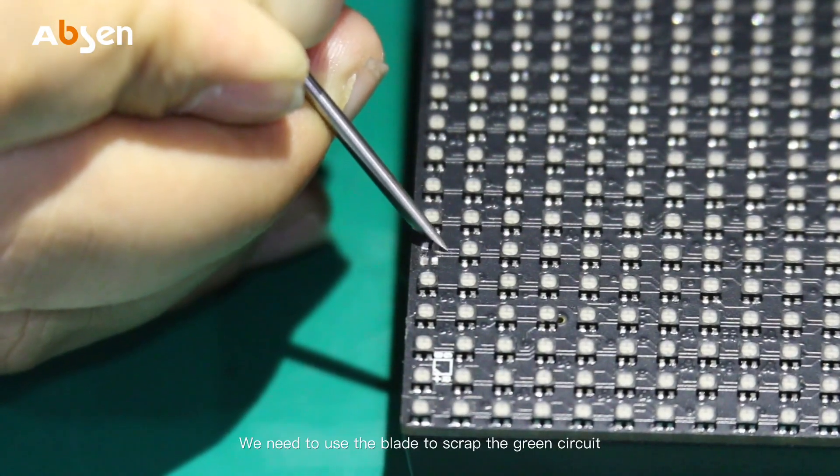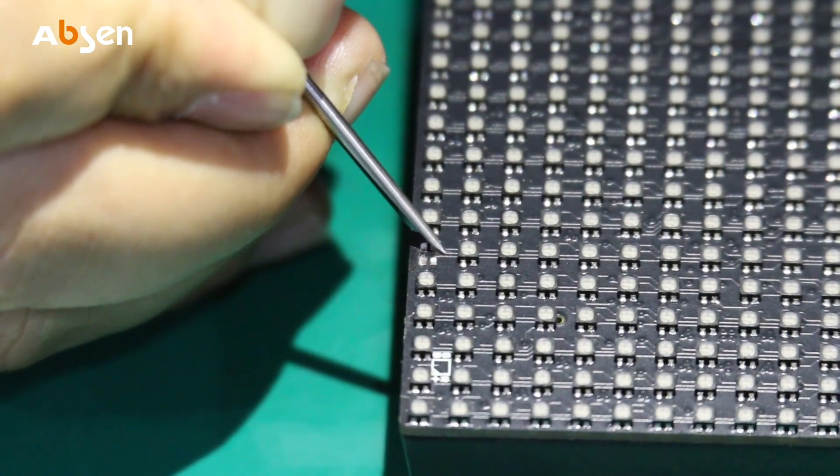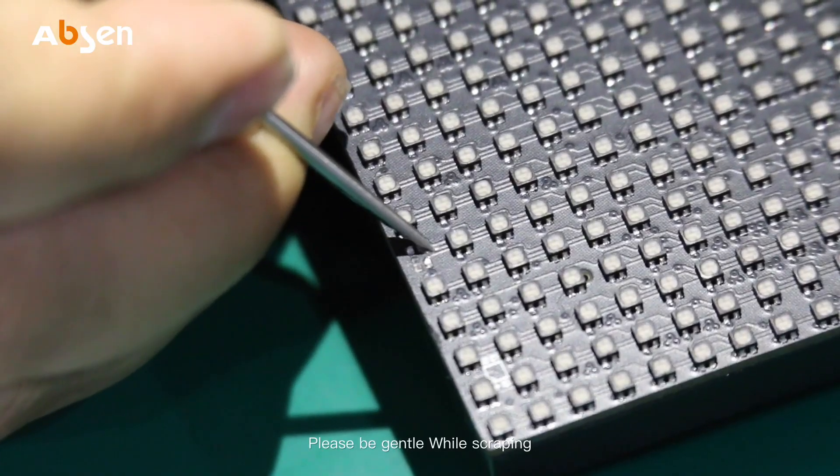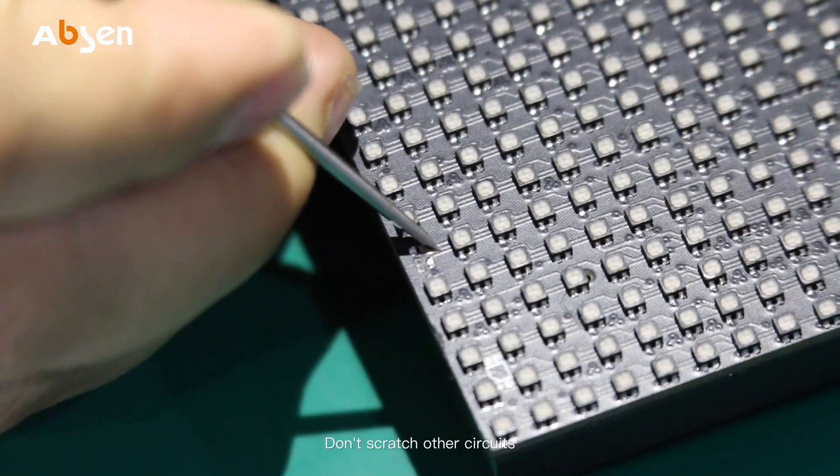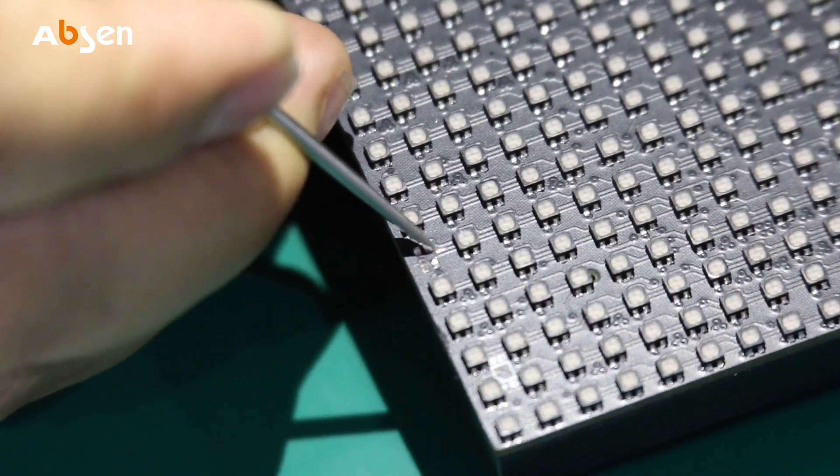I will teach you now how to jump the wire. After confirming the signal route, we need to use blade to scrape the green circuit. Please be gentle while scraping, don't scratch other circuits.